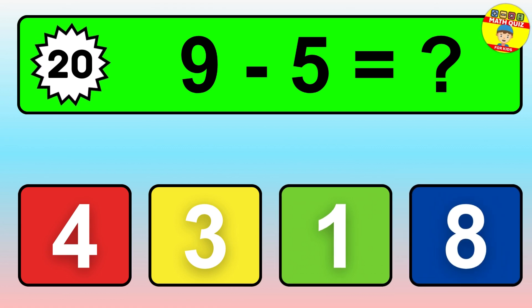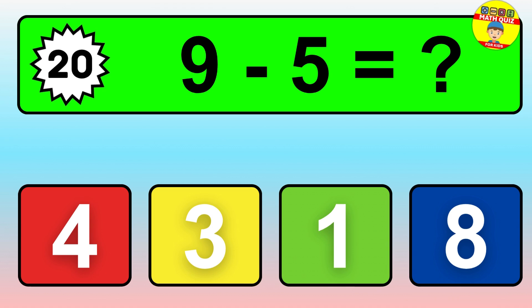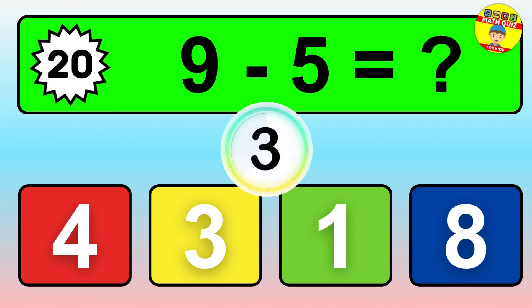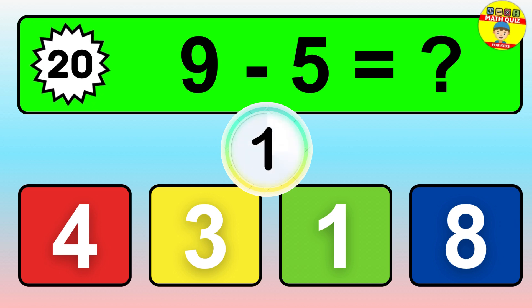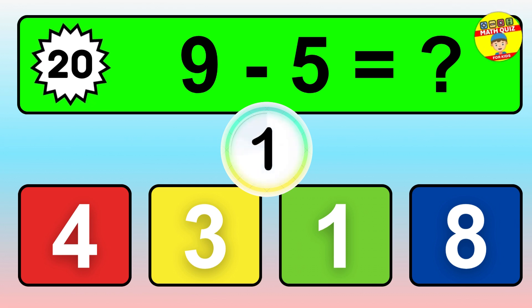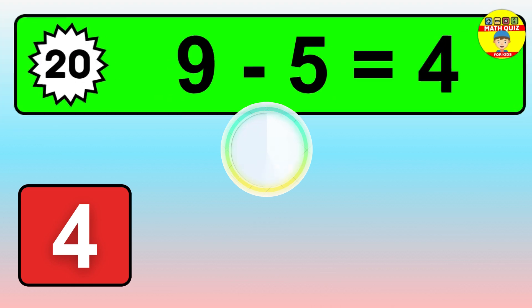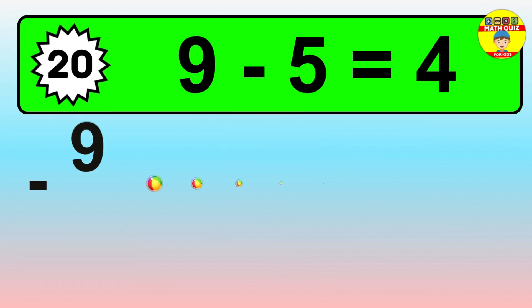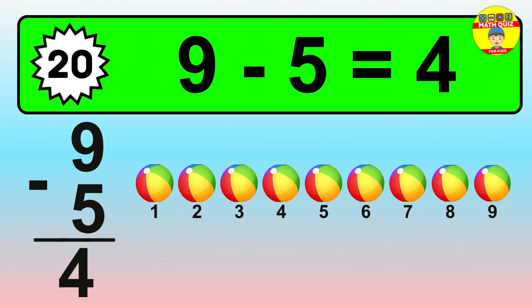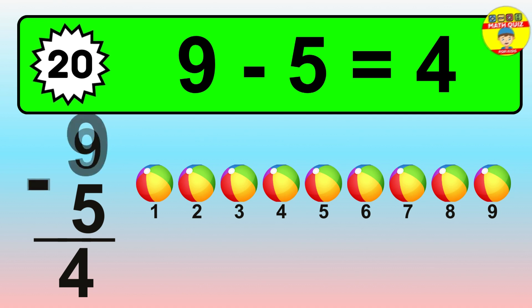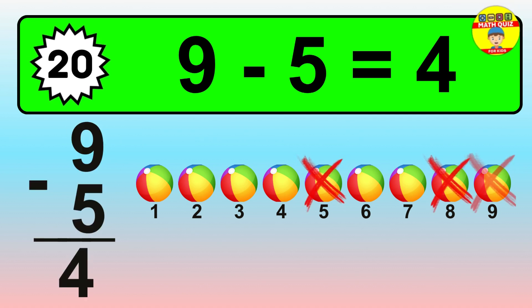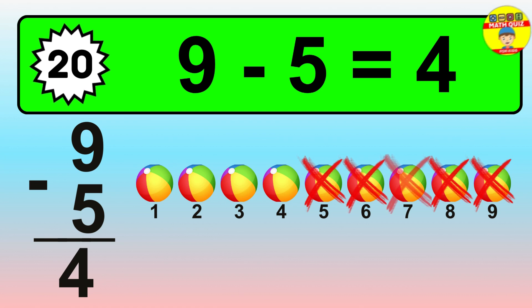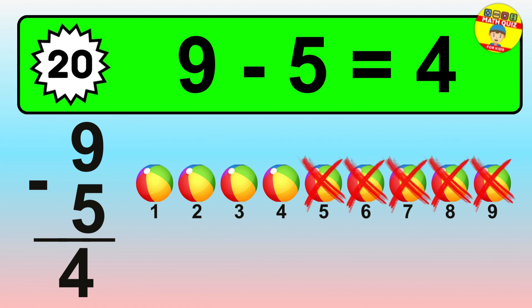Question twenty: nine minus five equals what? So the answer is nine minus five is four. Let's count it: one, two, three, four.